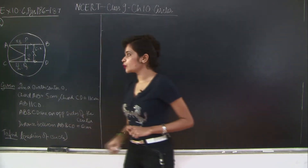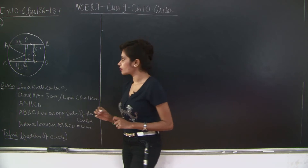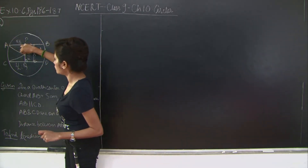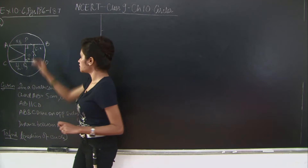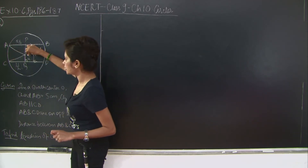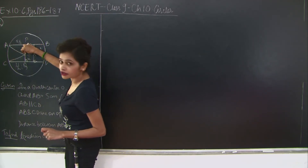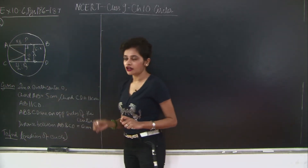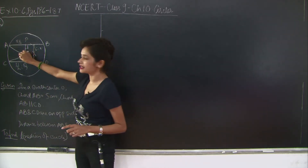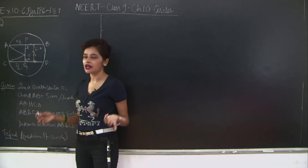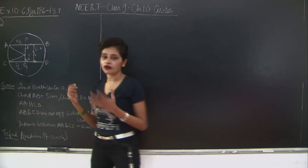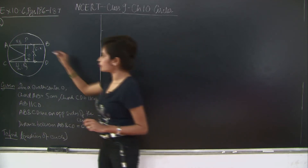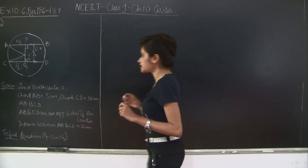Now we are going to apply Pythagoras theorem to find OA and OC, which are equal radii. We'll apply Pythagoras to triangle OCQ and triangle OAP, find the radii from each, then equate them since radii of the same circle are equal. That will help us find the length of the radius.